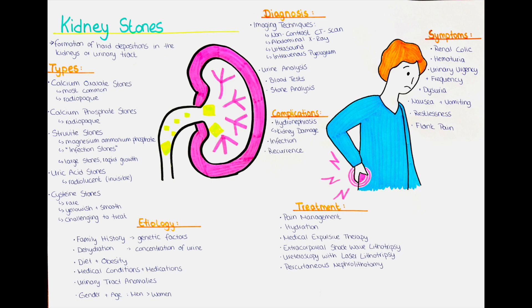The next type is calcium phosphate stones. These stones are also radio-opaque, so visible on X-ray, and they can be dense and appear as white spots on imaging studies. Another type is struvite stones. They are also known as infection stones and are often composed of magnesium, ammonium and phosphate. They can grow rapidly and can be quite large. Struvite stones are also usually radio-opaque, so visible on X-ray.